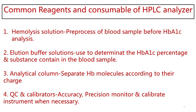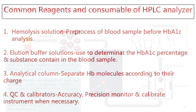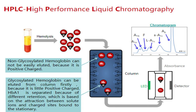Common reagents and consumables of an HPLC analyzer include: hemolysis solution, used to pre-process the blood sample before HbA1c analysis; elution buffer solutions, used to determine the HbA1c percentage and substance content in the blood sample; an analytical column, which separates hemoglobin molecules according to their charge; and QC and calibrators, used to verify accurate operation and calibrate the instrument when necessary.